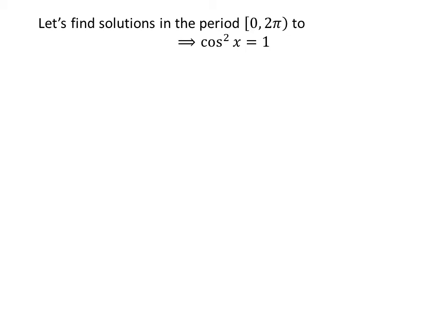Now, let us find the solutions to cos²x = 1 in the period [0, 2π]. Taking the square root of both sides gives us cos x = ±1.